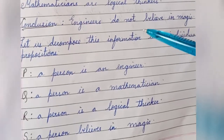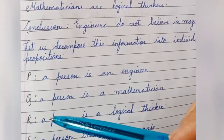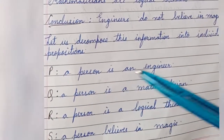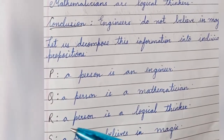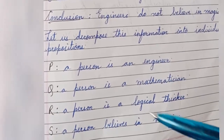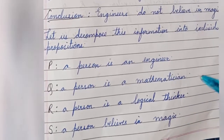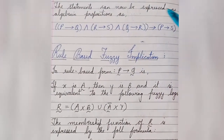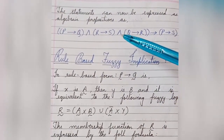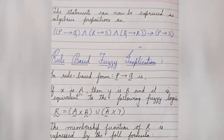The conclusion is: engineers do not believe in magic. Let us decompose this information into individual propositions. There are four propositions P, Q, R, S: P — a person is an engineer; Q — a person is a mathematician; R — a person is a logical thinker; S — a person believes in magic. The four statements can now be expressed as algebraic propositions: P implies Q, Q implies R, R implies not-S, and P implies not-S.